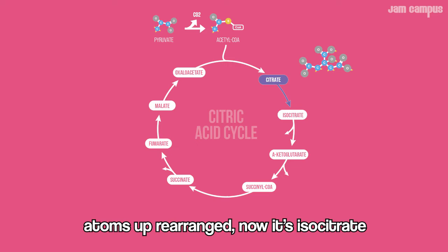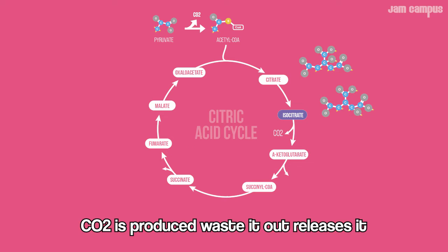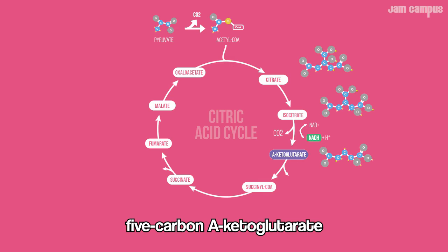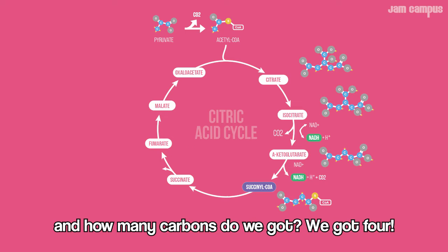Now it's isocitrate. Oxidation takes a carbon — combining with oxygen, CO2 is produced and released. NAD+ gains an electron, becomes NADH. 5-carbon alpha-ketoglutarate: lose the CO2 and a new NADH is made. Coenzyme A is grabbed up.